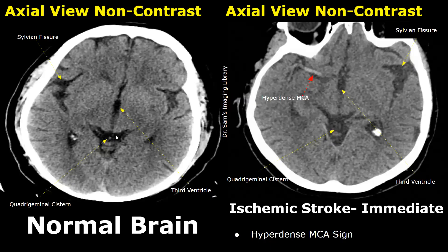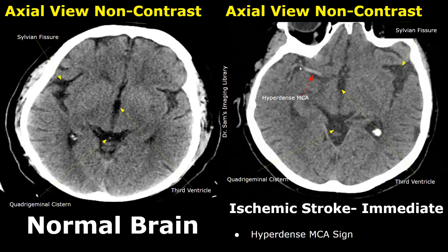This is a case of ischemic stroke in the immediate setting. The earliest sign of ischemic stroke on a CT scan is the hyperdense middle cerebral artery sign, or hyperdense MCA. In a non-contrast CT scan,